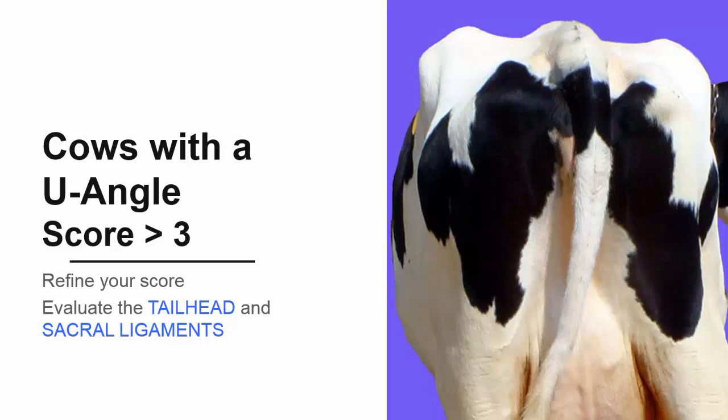Now, let's go back to that very first decision where we separated cows based on the angle between their hooks and pins and work at refining scores greater than 3. To do this, we start by evaluating the tail head and sacral ligaments. The tail head ligament is found between the tail head and the pins. The sacral ligament is found between the spine and the hooks. The visibility of these ligaments will help you score cows with more condition.